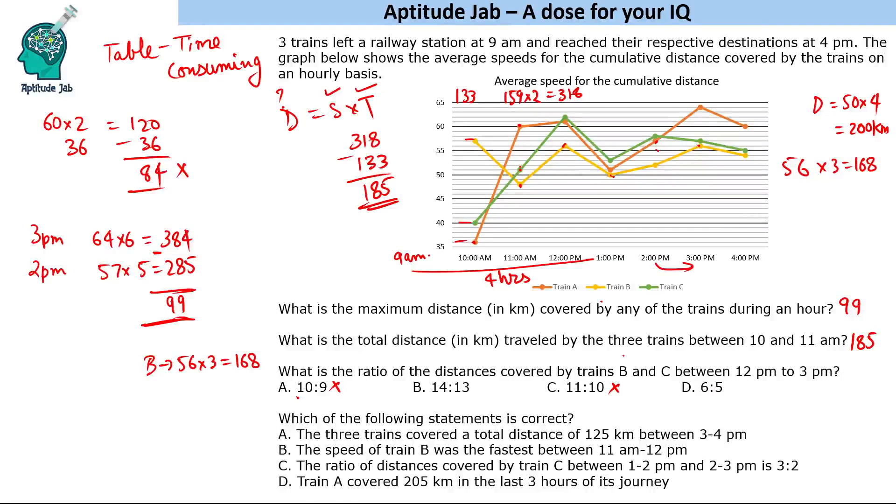Since there are two options we'll have to check for train C also. Train C at this stage was running at a speed of 57, so 57 into 6 is 342. At 12 PM the train was at 62, so 62 into 3 is 186. The difference is 156. So the answer is 168 ratio 156, which is 14 ratio 13.